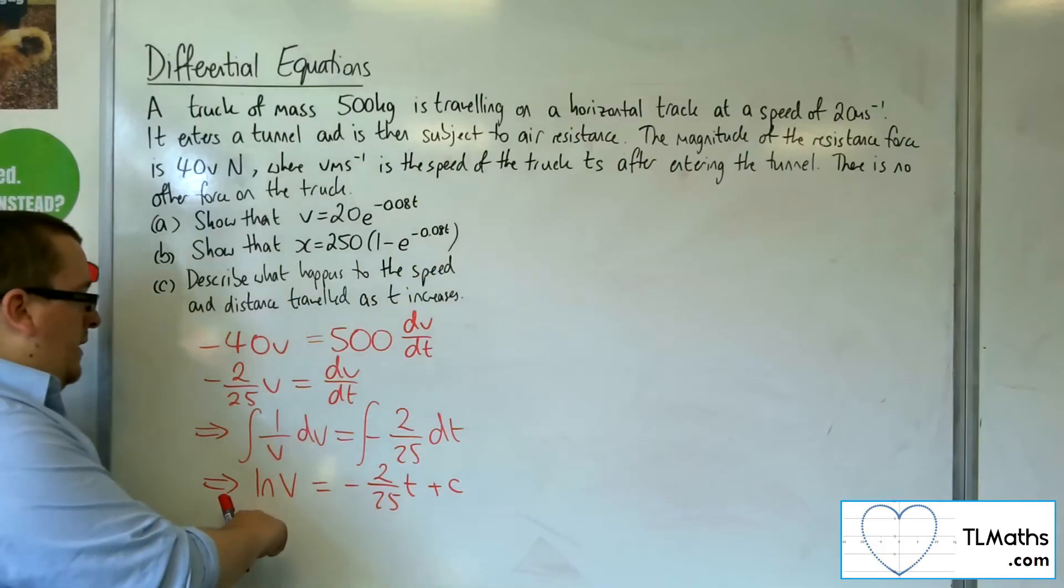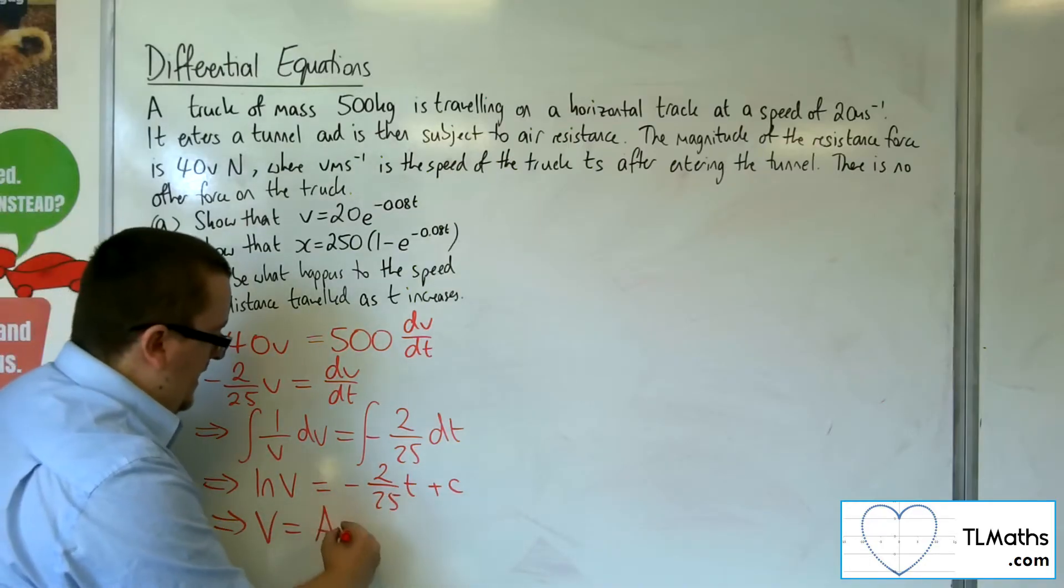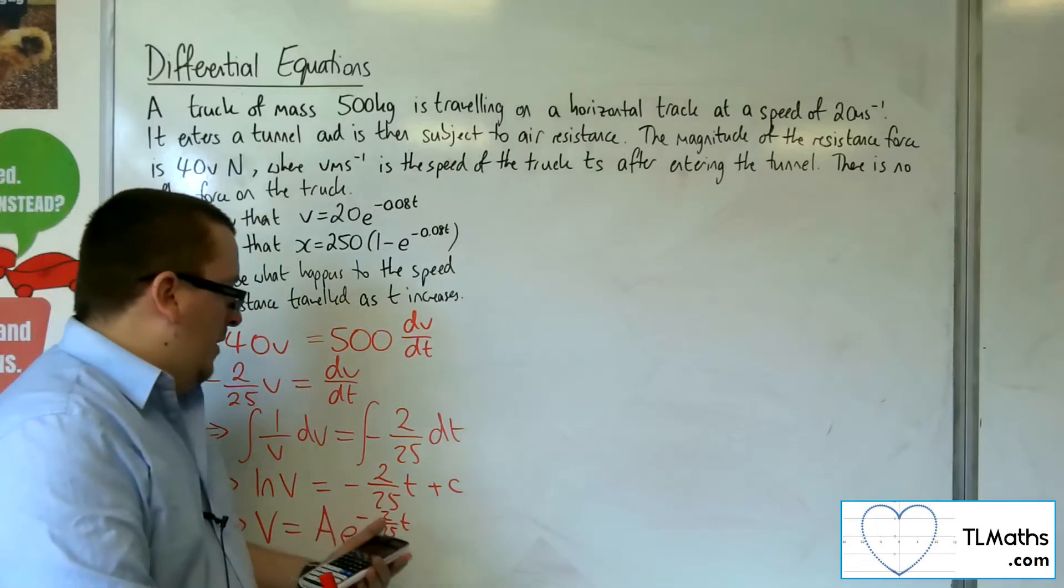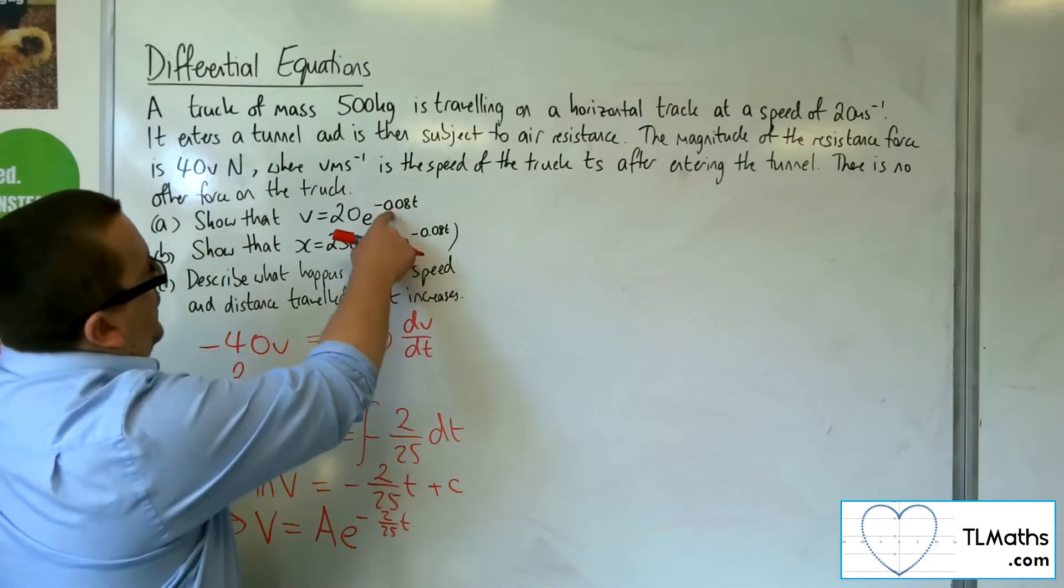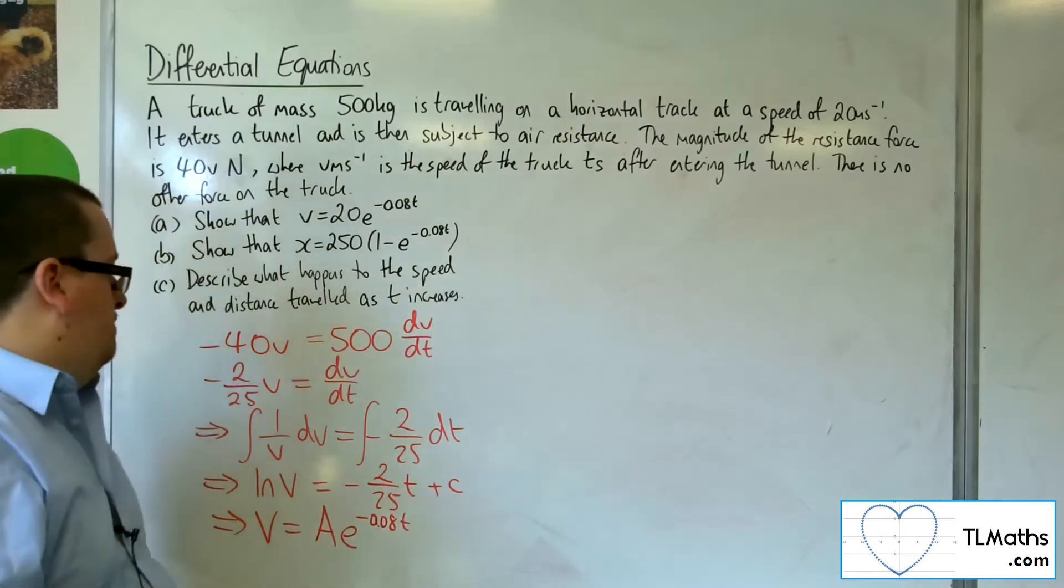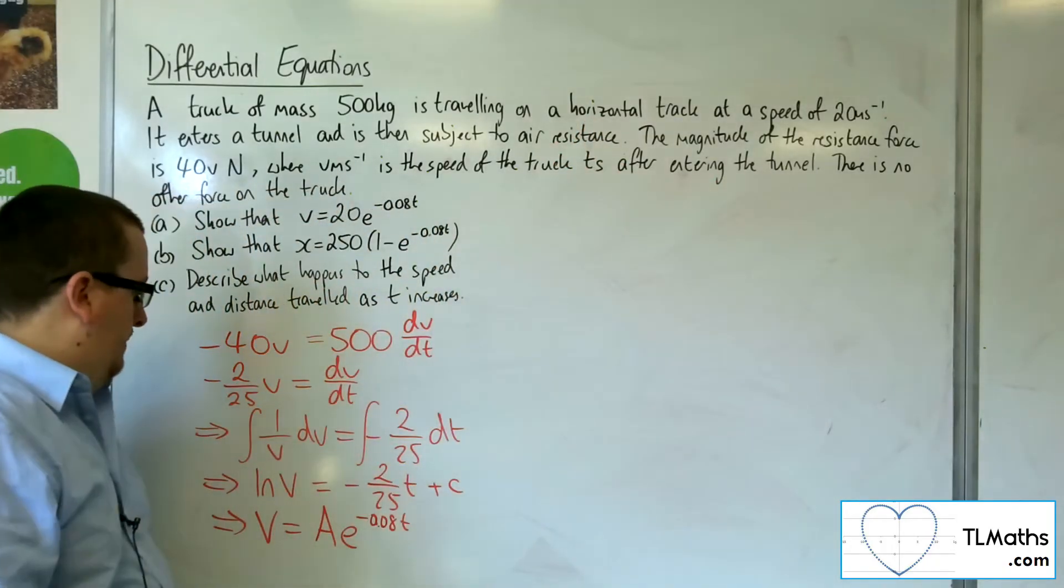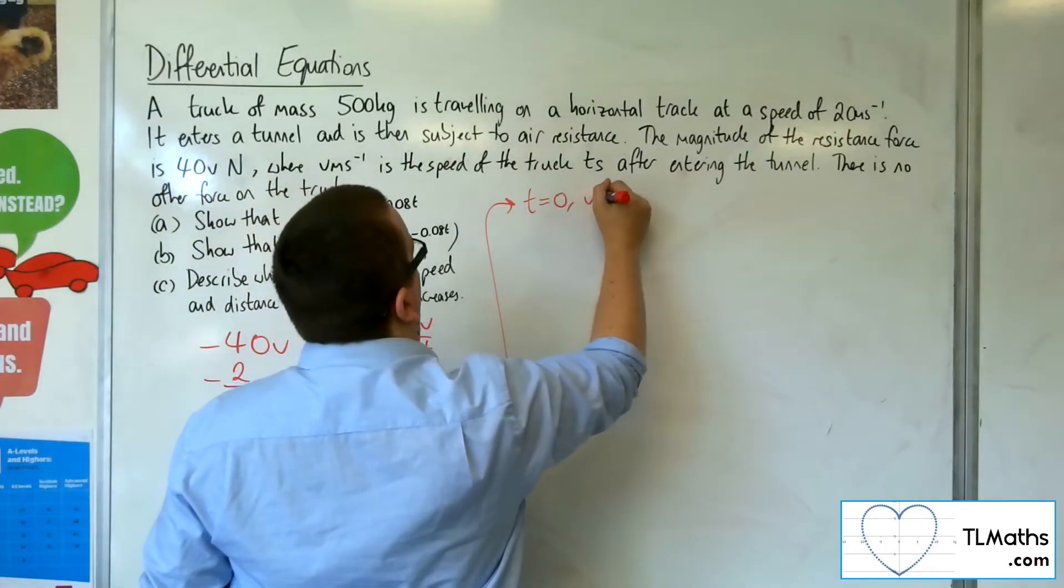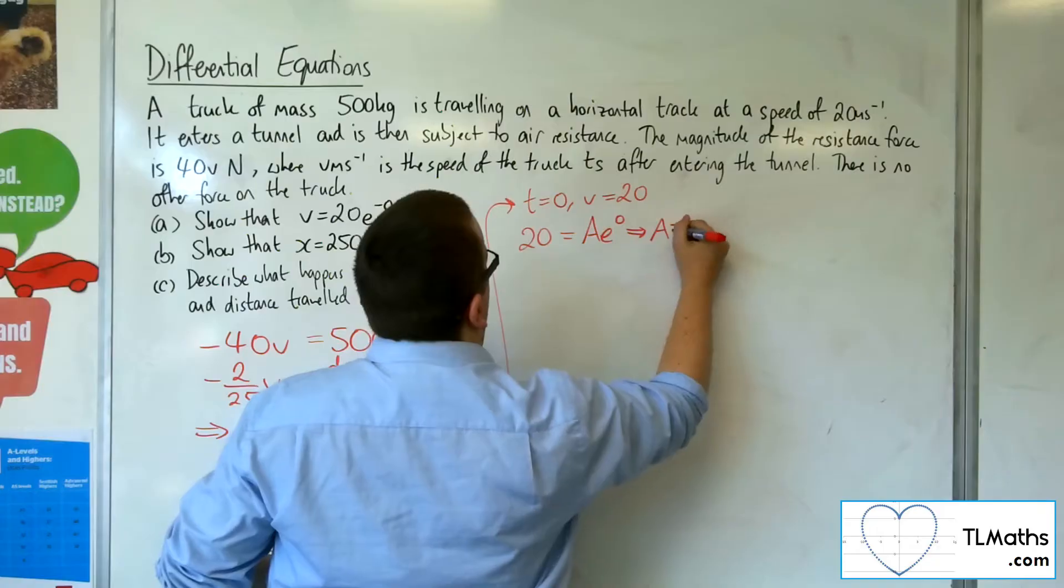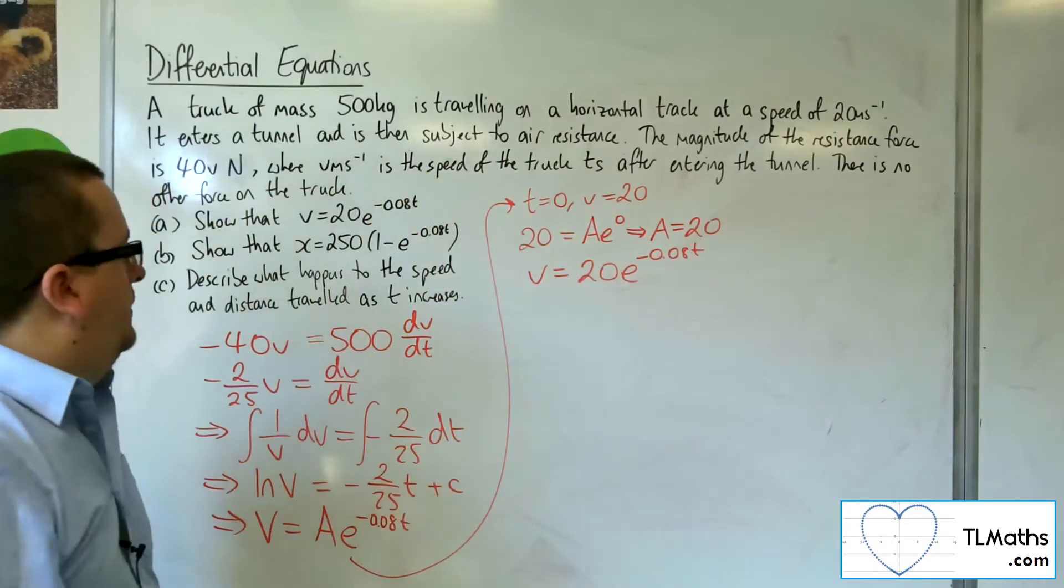So V equals Ae to the minus 2 over 25 T. The minus 2 over 25 here is 0.08, so that's consistent with what's in the question. We know that the speed of the truck initially is 20 meters per second. So when T is 0, V is 20. 20 equals A times e to the 0, so A is 20. Therefore V is 20e to the minus 0.08T as required. That's part A.